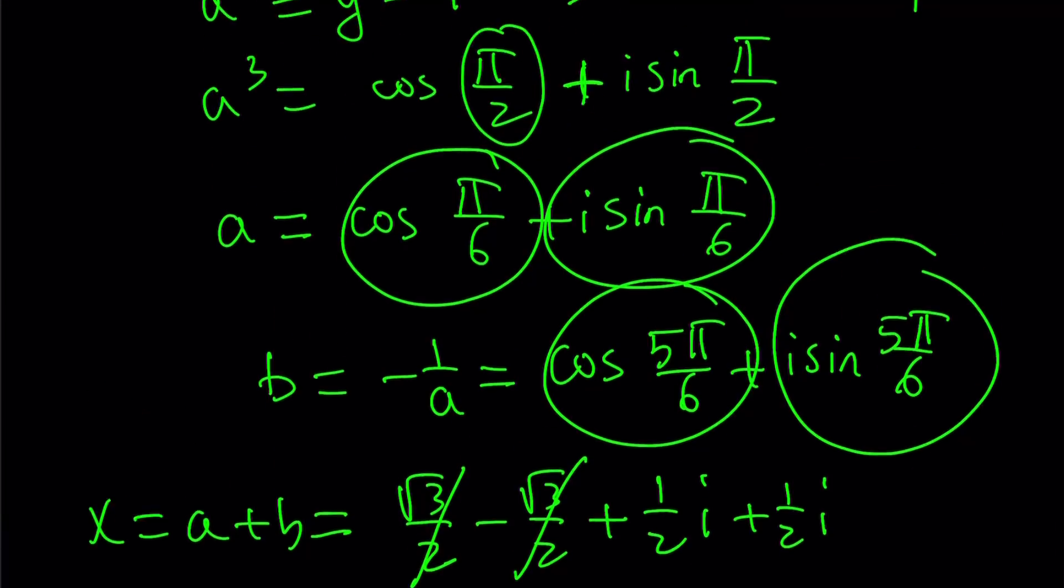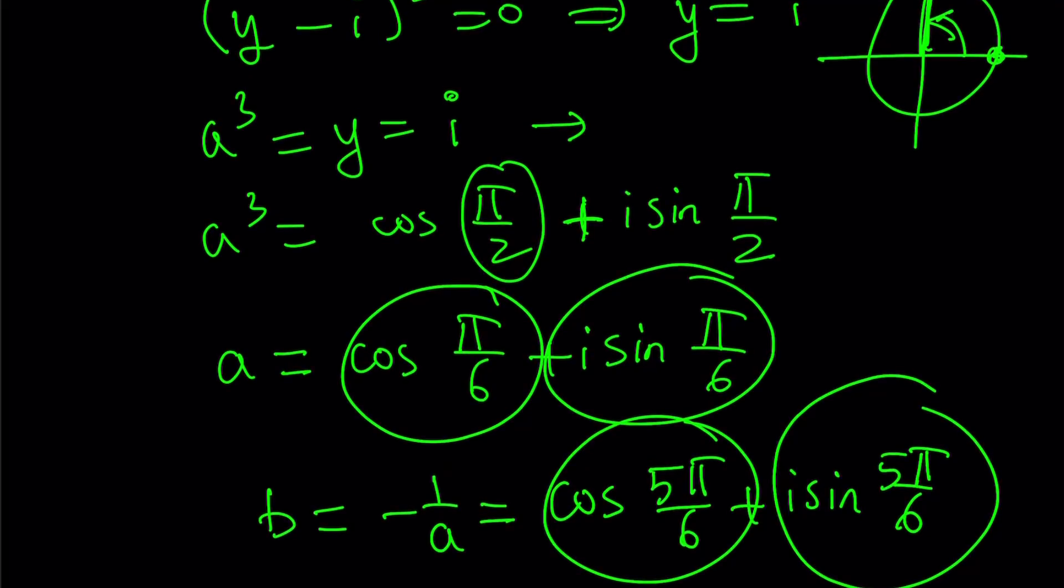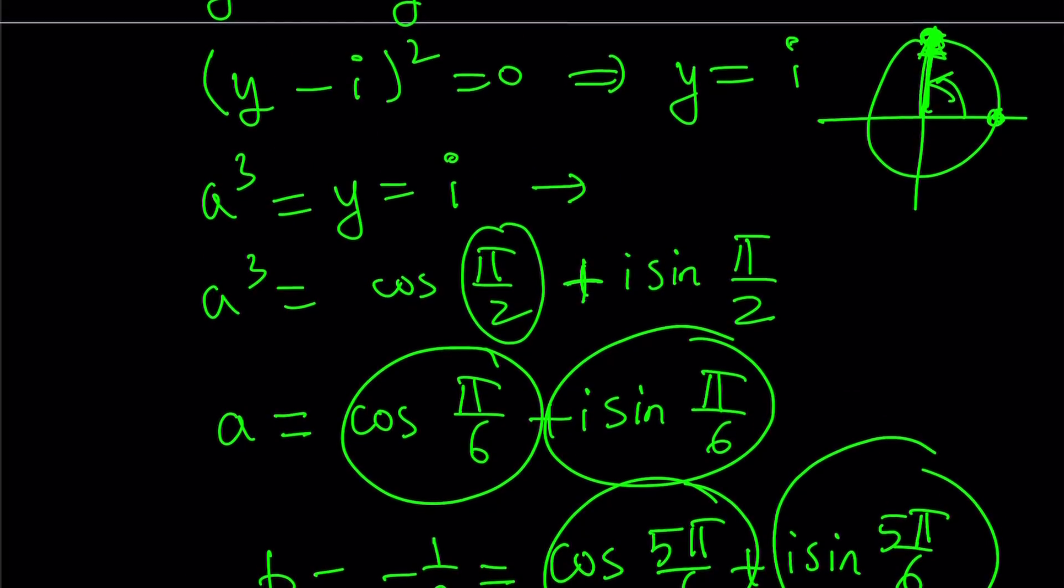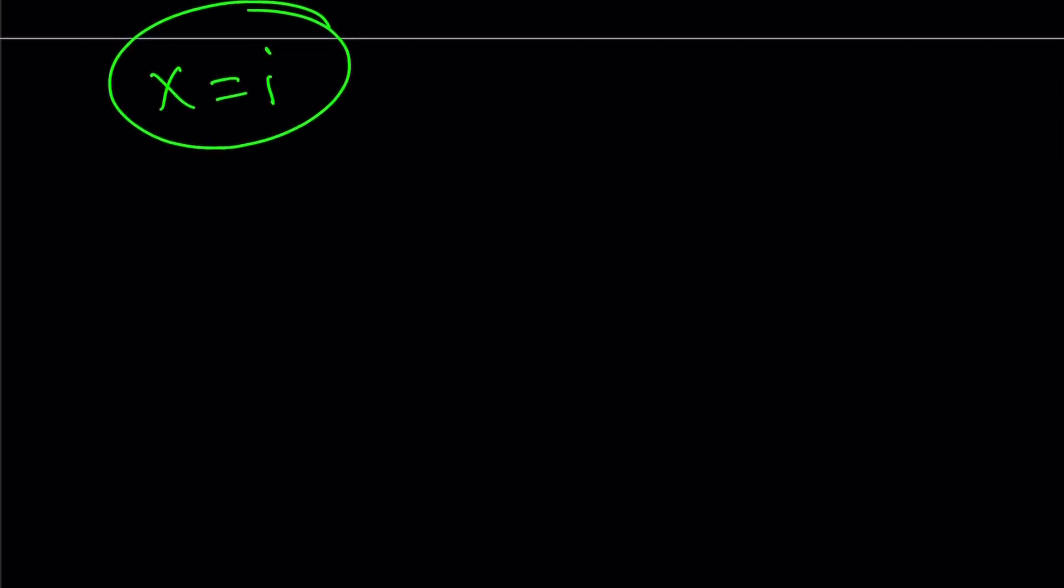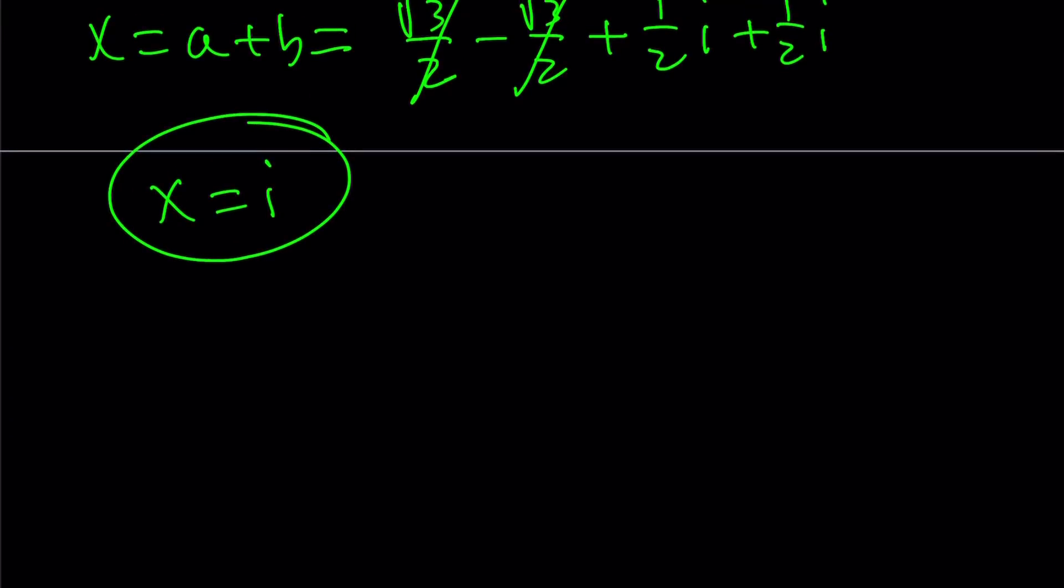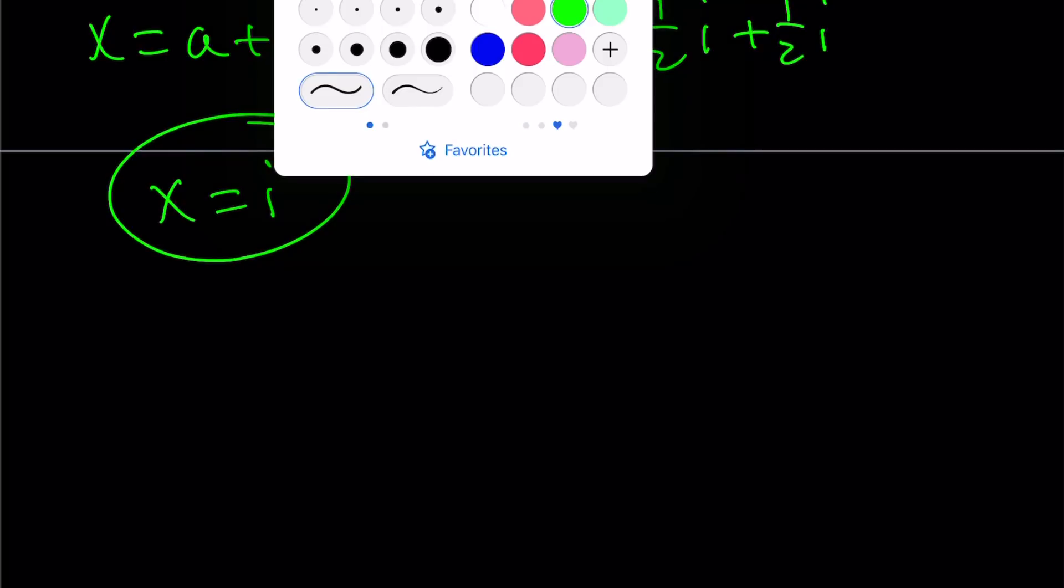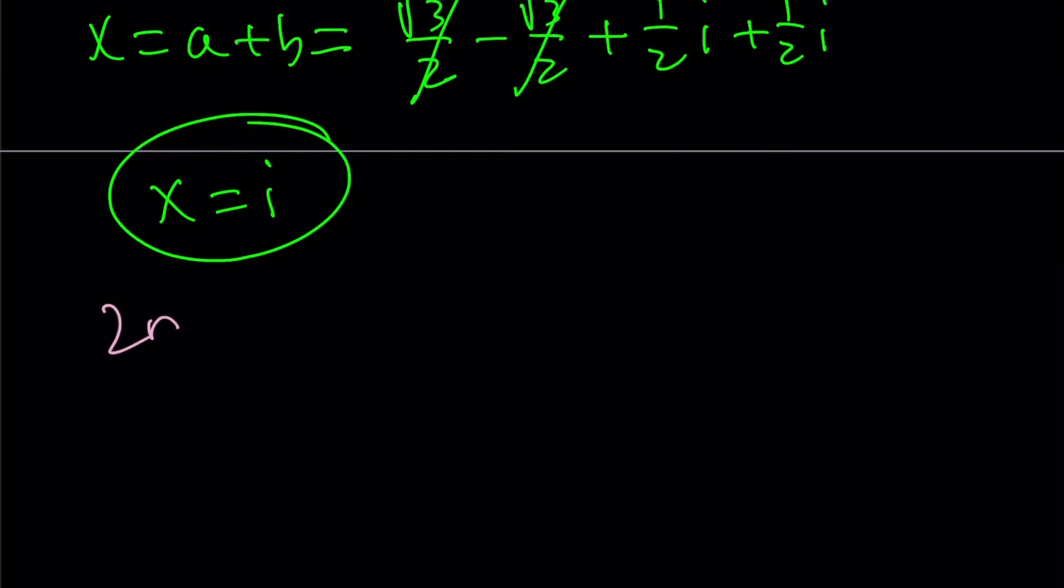So x is equal to i, and we're going to find the other solutions from here. But let me go ahead and proceed with the second method, because I'm going to show you the rest in there. So second method relies on guess and check. How does it work? Here's how it works.